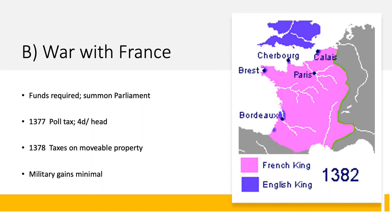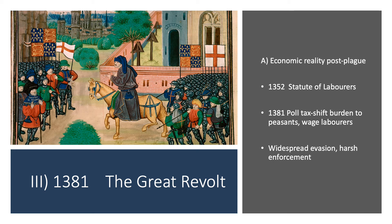In 1378, there was another tax on movable property, also considered very unfair by the peasants. Widespread evasion of these taxes occurred, so it's not entirely clear how much was actually collected. These taxes intersected with a lot of frustration on the part of the peasant class, particularly in the wake of the plague. In spite of all the revenue raised, the military gains of the English army were very minimal — they returned from campaigns with very little to show for it.